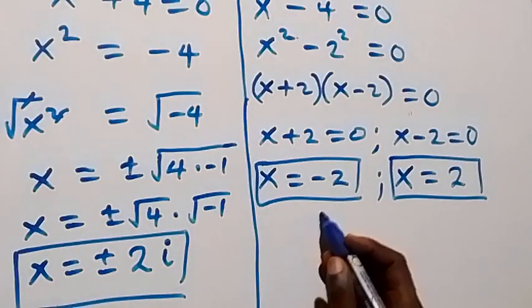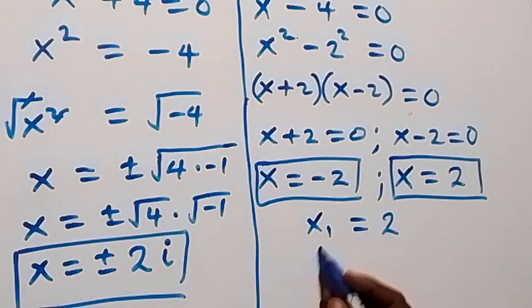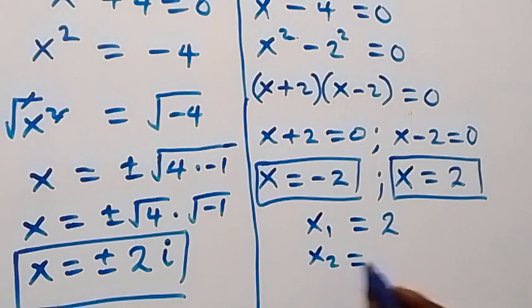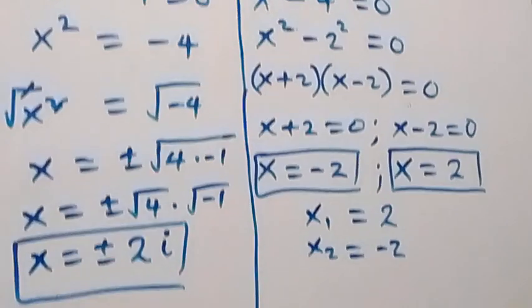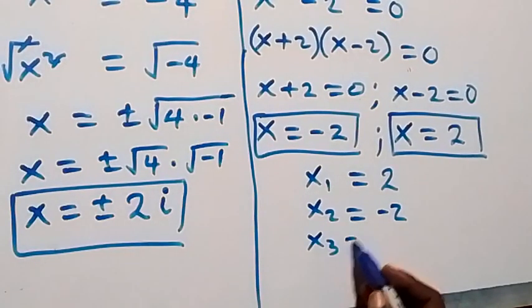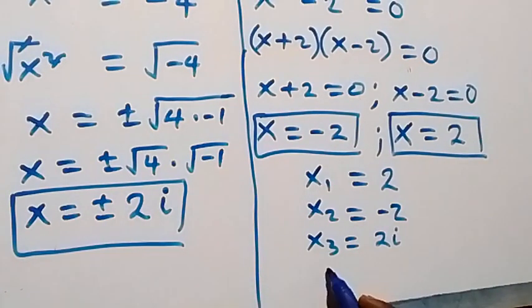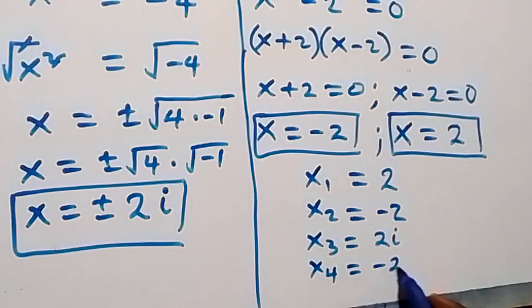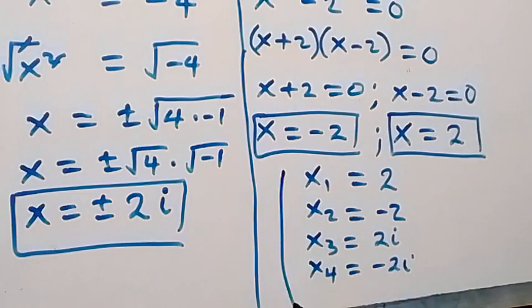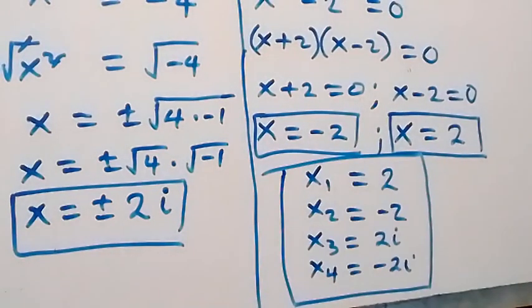From here we have all together four solutions: x₁ equals 2, x₂ equals minus 2, x₃ equals 2i, and x₄ equals minus 2i.